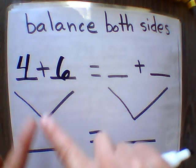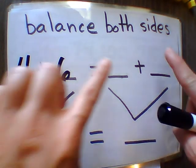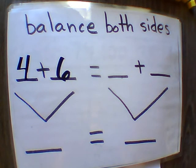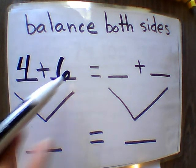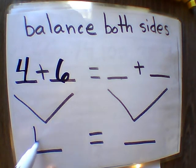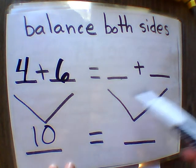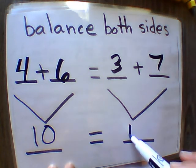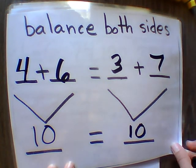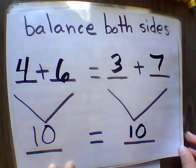Balance both sides: solve what the first equation equals, then create another equation to equal the same amount. So four plus six equals ten — it's a ten fact. Then I'm going to create another one on the other side, like three plus seven equals ten. You can use any ten fact you wanted.